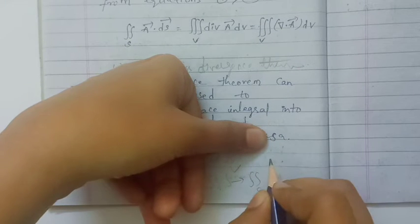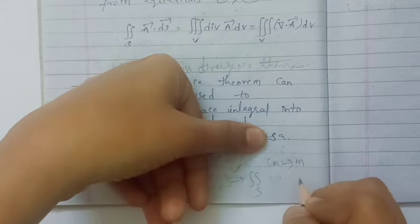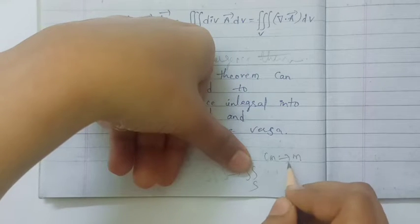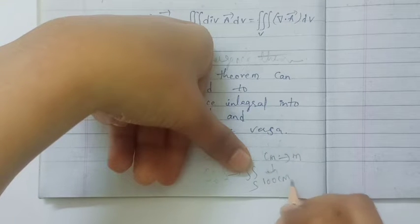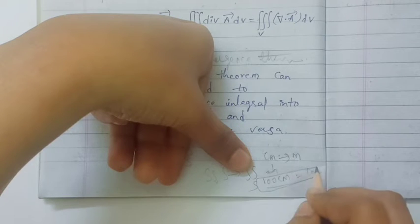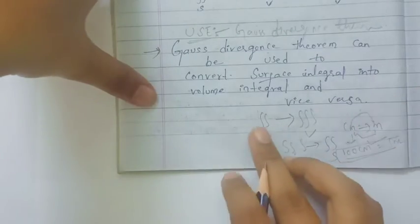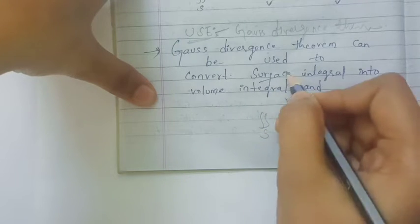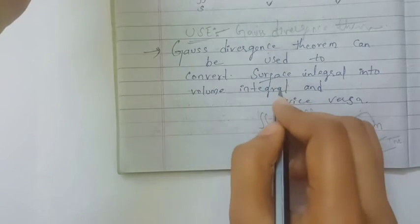Basically, if we want to convert one thing from another, we need a perfect relation between them. For example, as we discussed in Stokes Theorem, if we want to convert a quantity from centimeters to meters, we know the relationship: 100 centimeters equals 1 meter. Similarly, Gauss Divergence Theorem provides the relation between surface integrals and volume integrals.